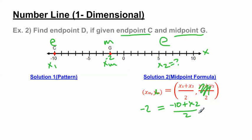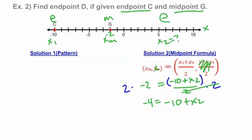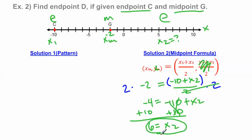Adding 10 to both sides, we get 6 equals x sub 2. Both problems happen to have the same answer of 6 — just a coincidence. So we know that endpoint D is located at 6. Let's use the pattern method to double-check.